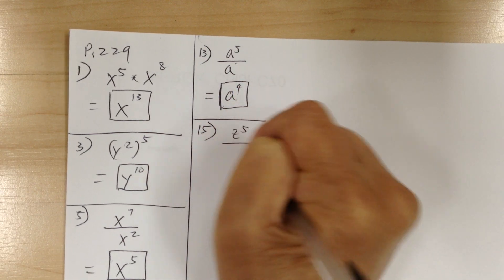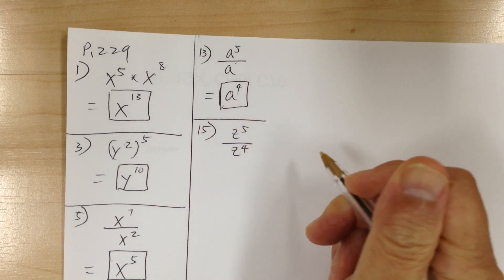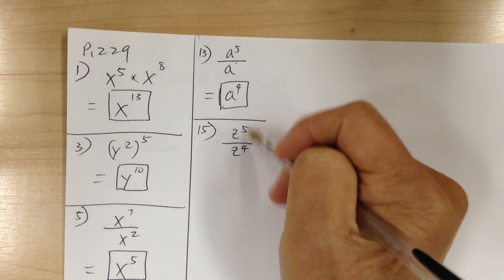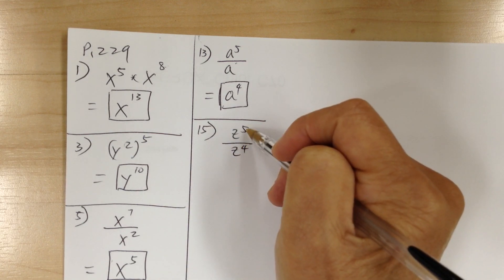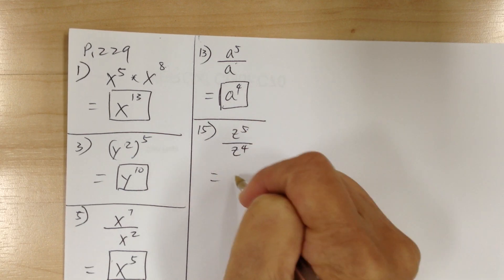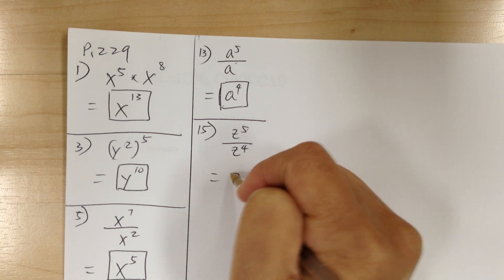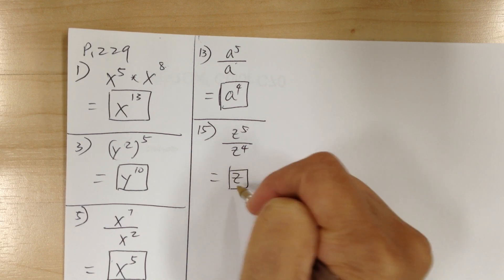You got z to the 5 over z to the 4. Division, you subtract. So 5 minus 4 equals 1, so it would be just z to the 1. When the exponent is 1, you don't write anything — just z.